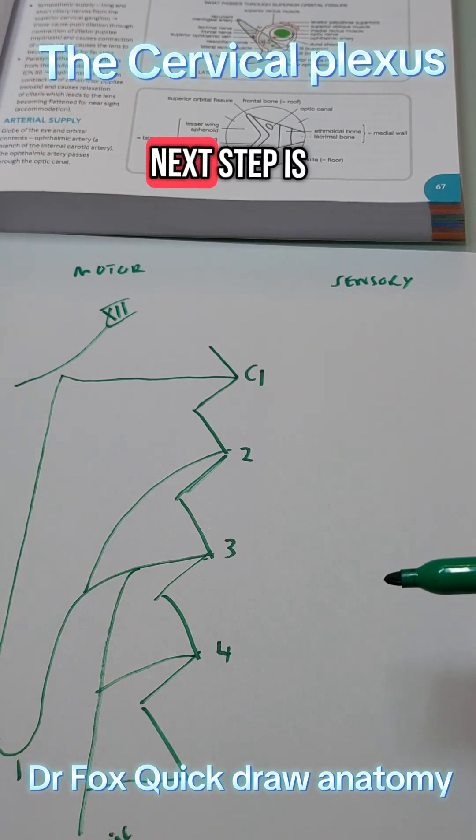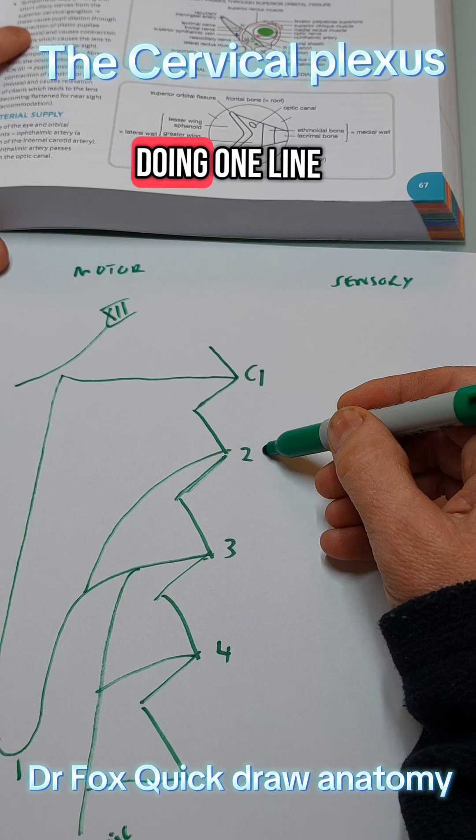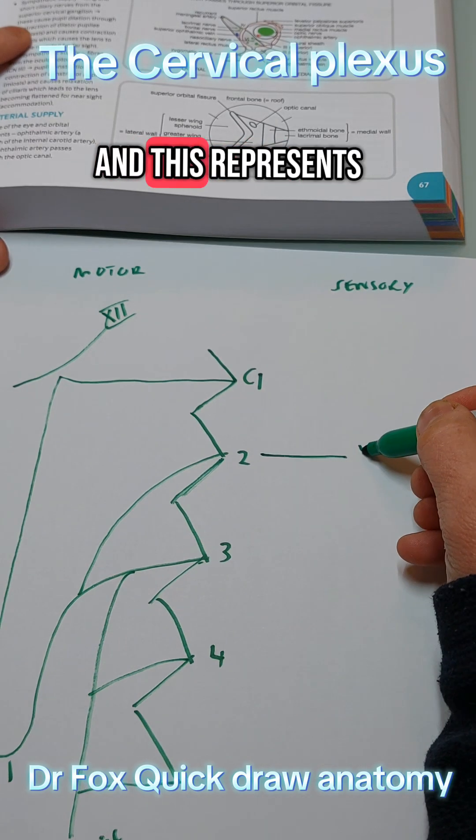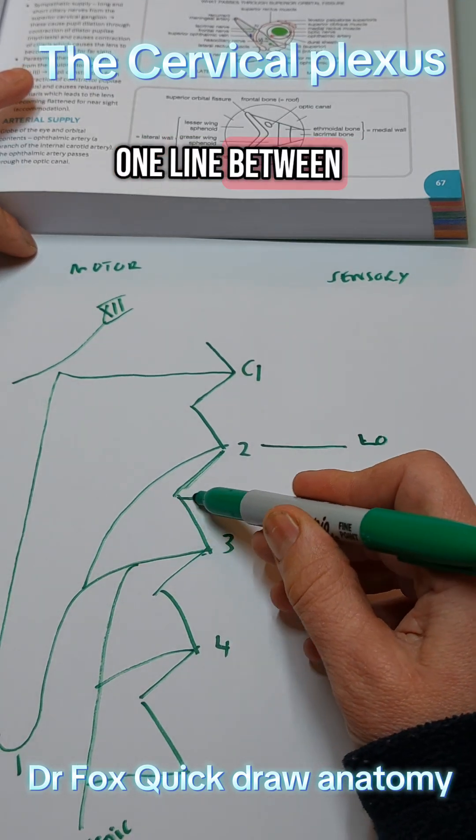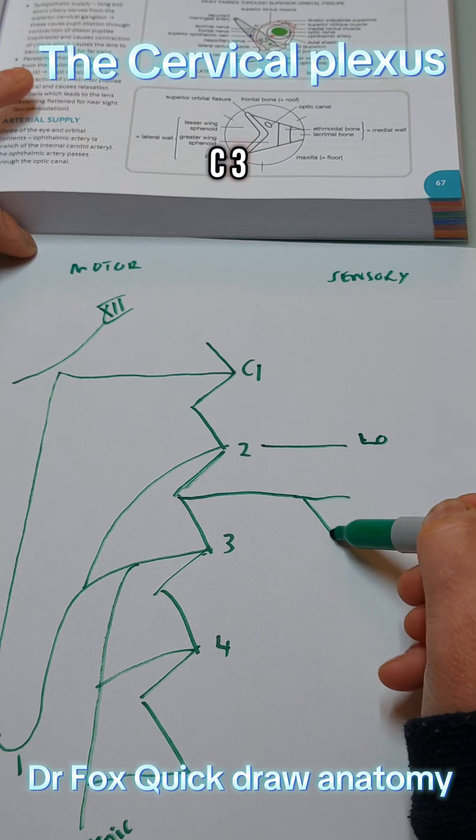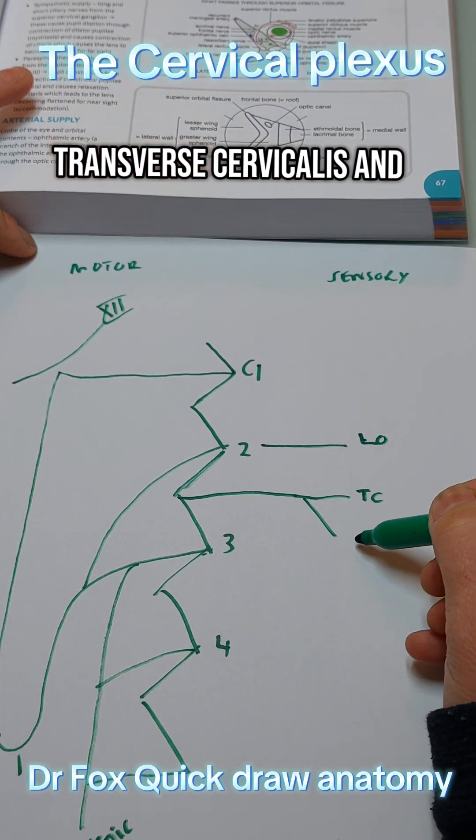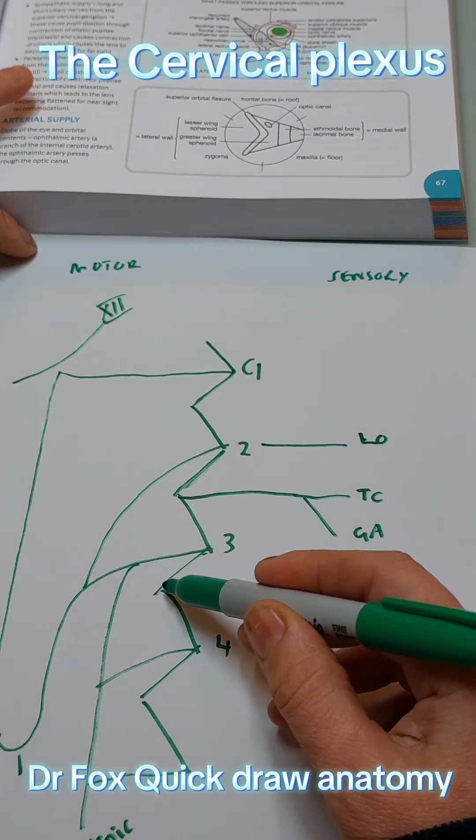So then the next step is to add in the sensory nerves. So start by doing one line from C2 and this represents the lesser occipital. And then draw one line between C2 and C3 and this represents transverse cervicalis and the greater auricular.